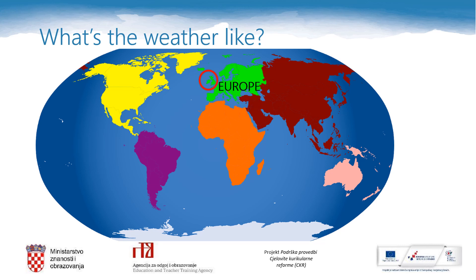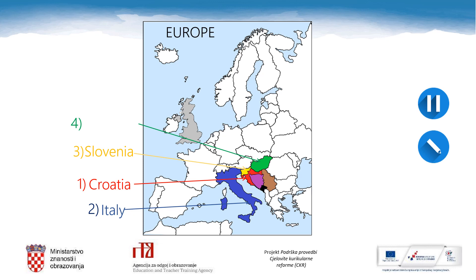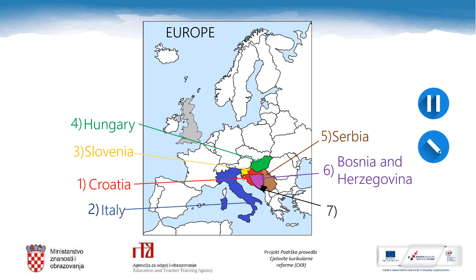England is in Europe. What other European countries do you know? The countries you know are marked with colours and numbers. Country number one is our country, Croatia. Number two is Italy. Number three is Slovenia. Number four is Hungary. Number five is Serbia. Number six is Bosnia and Herzegovina. Number seven is Montenegro.